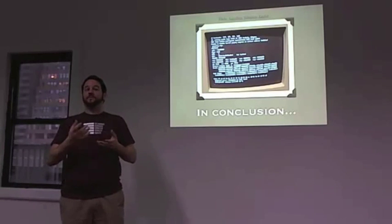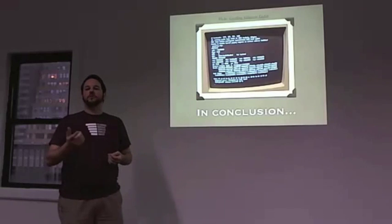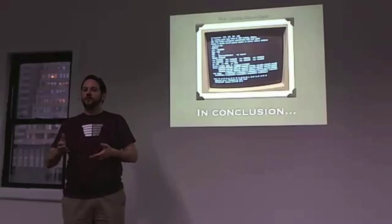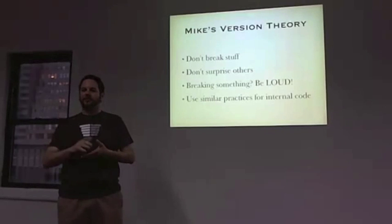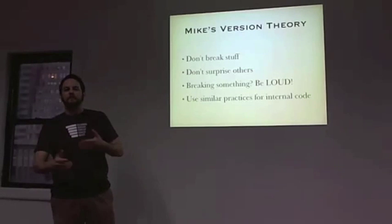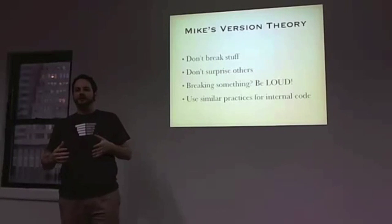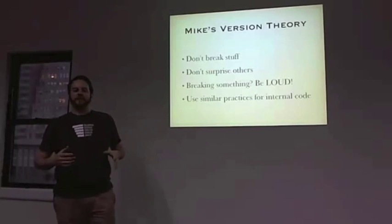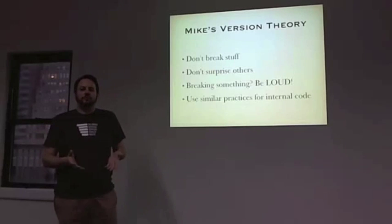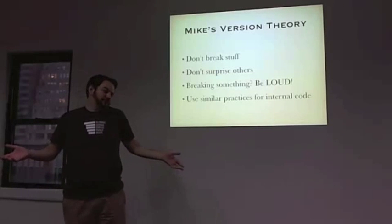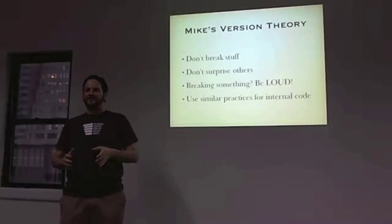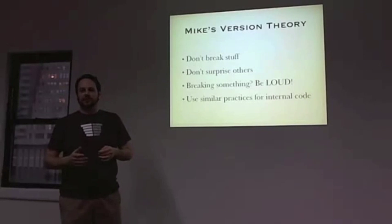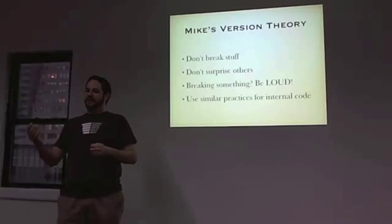Before they even read the code, they just see: oh, it's version 2.1.1 — oh, I already have 2.1.0, this cannot break anything. My versioning theory is: don't break things. If you don't have to, just don't break it. Don't surprise anybody else, because the minute you think nobody is using your code, you find out who they are.